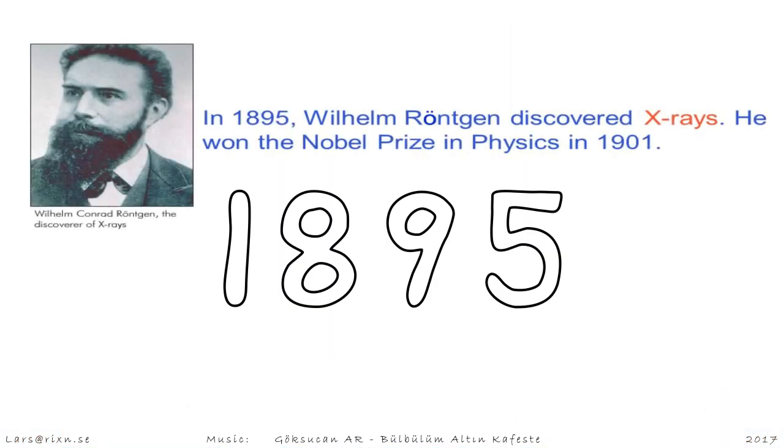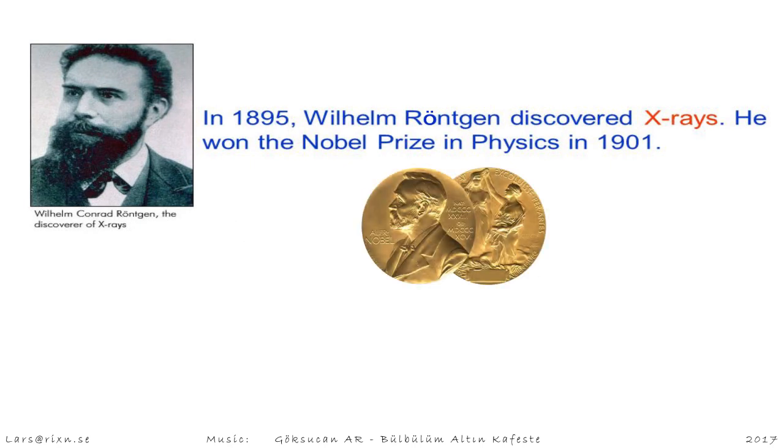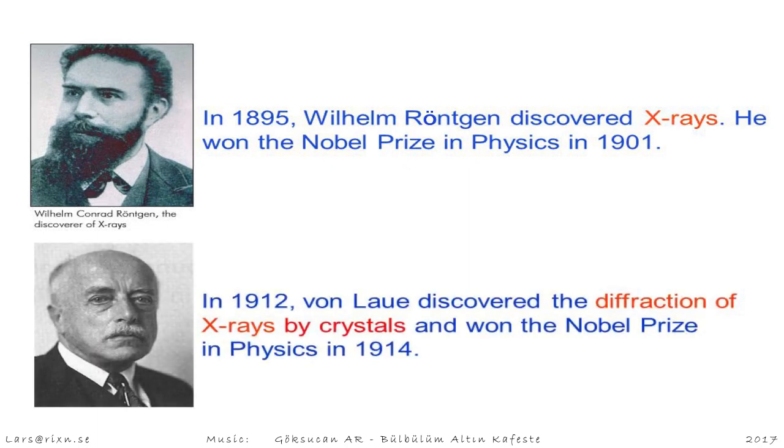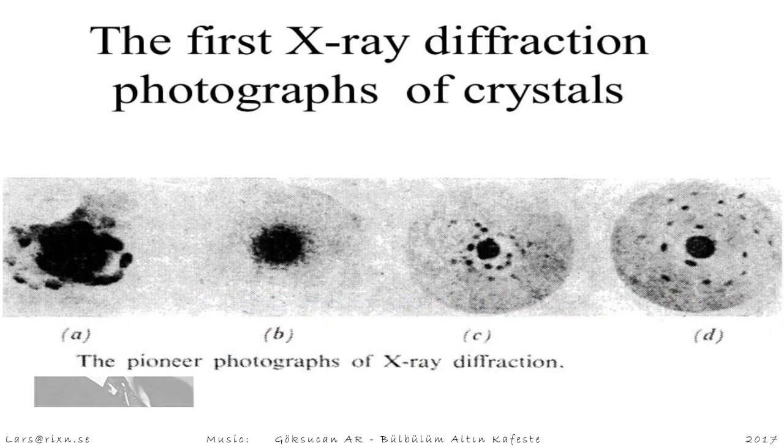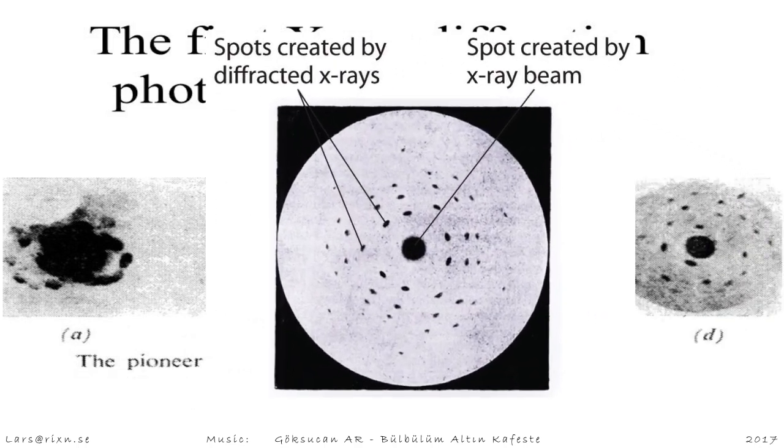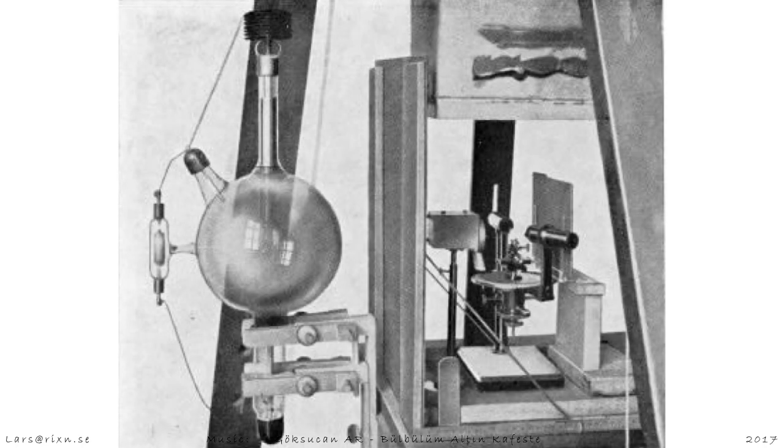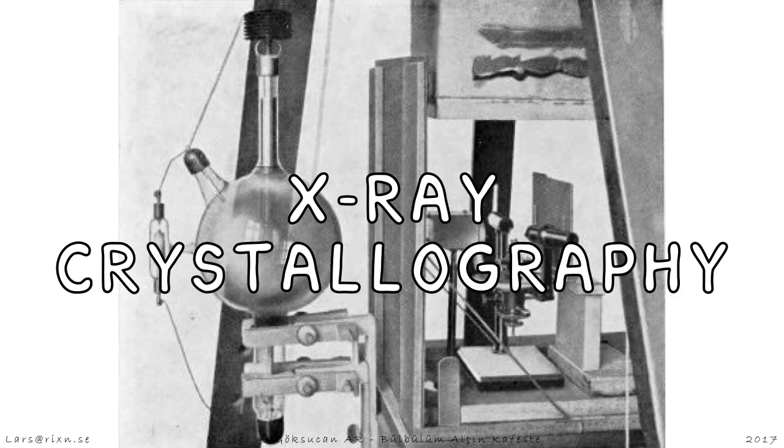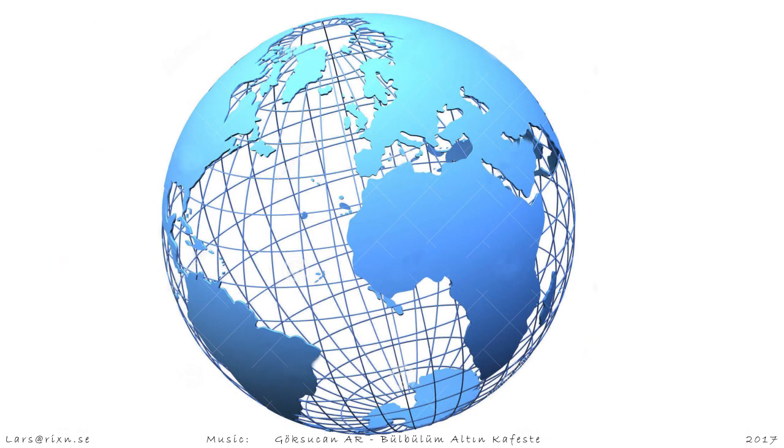In 1895, Wilhelm Röntgen discovered X-rays. He won the Nobel Prize in 1901. In 1912, X-ray diffraction enabled scientists to see the pattern of crystals. The new field of study was called X-ray crystallography. Only 1, 2, 3, 4, and 6-fold structures were found. The order of nature was intact.